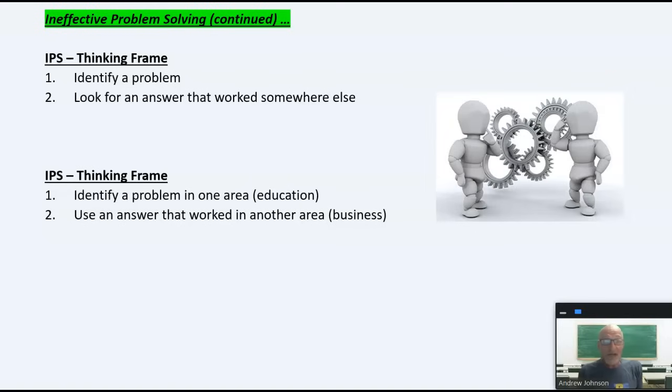Another one, you identify a problem and then you look for an answer that works someplace else. Well, it worked last year. It worked with this group, so it must work here. Or you identify a problem in one area, such as education, and you use an answer that works someplace else. We see this common in education when people try to bring business leaders in or use the business model. The business model works for business, where profit is the bottom line. Education needs education answers because people are the bottom line.